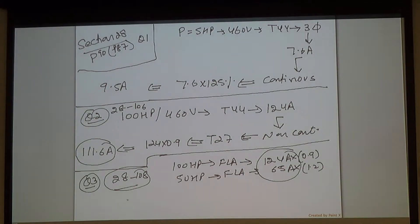So, dear, when you multiply, what's 124 times 0.9? 111.6. And for the second one, which is 65 times 1.2? 78 amps. When you linearly add them, that's when you're going to find the feeder size.